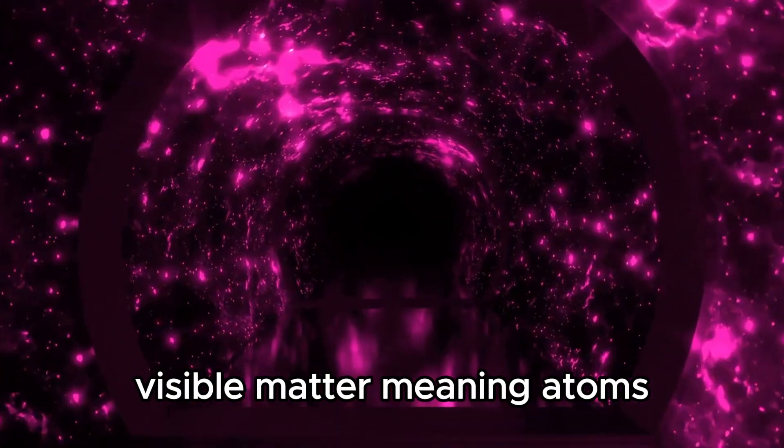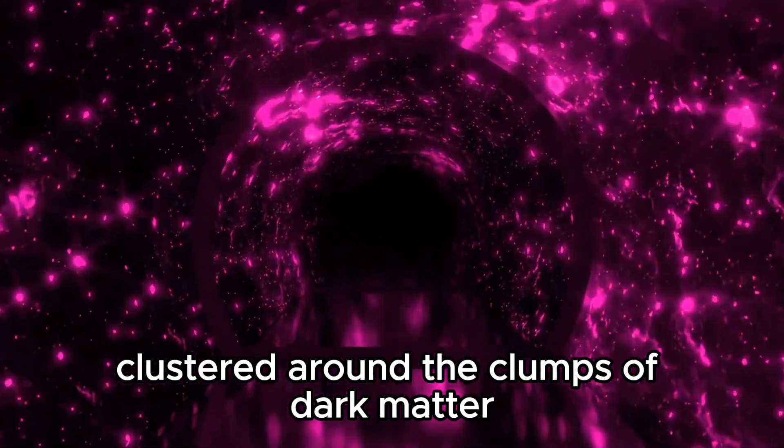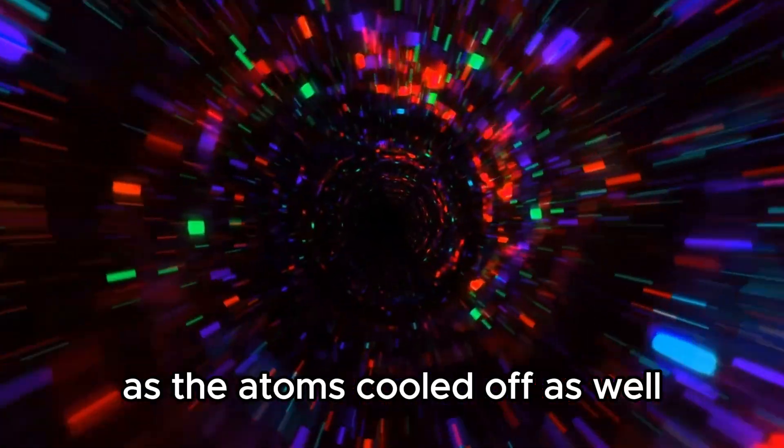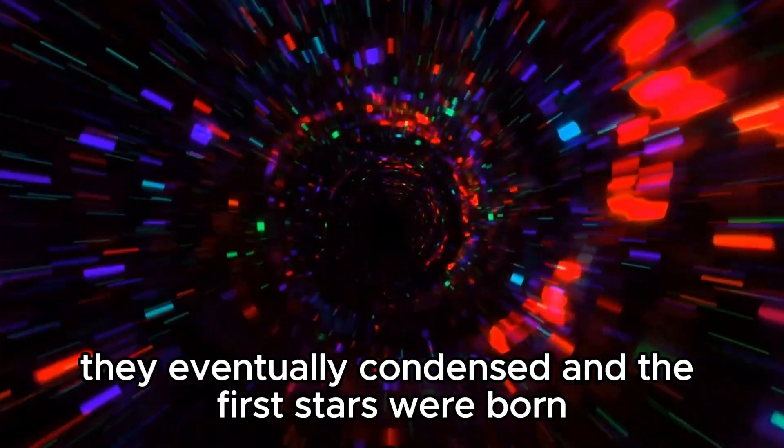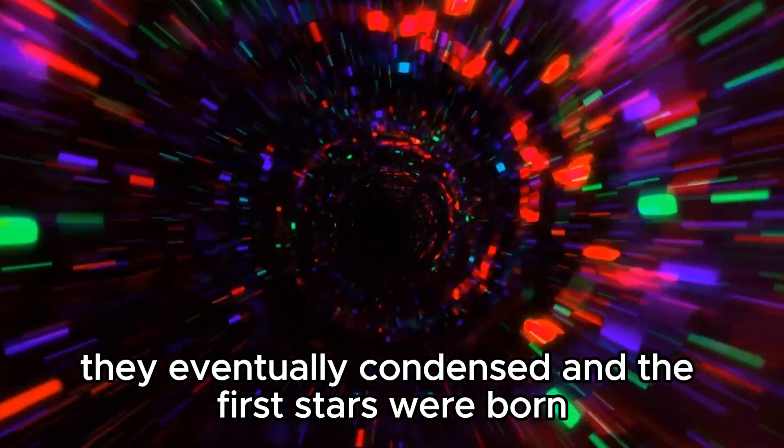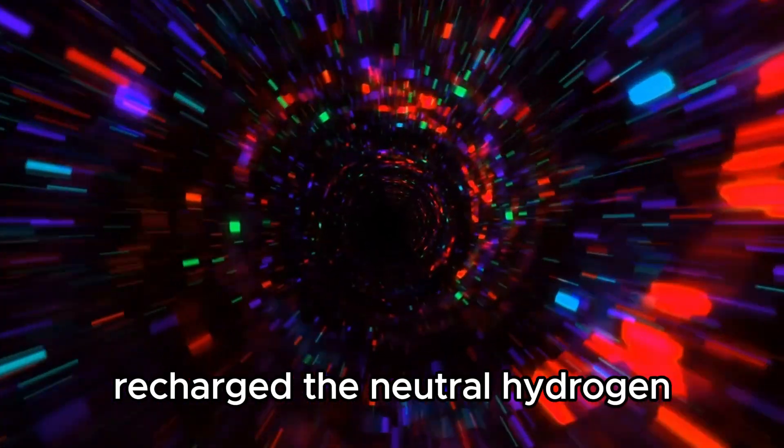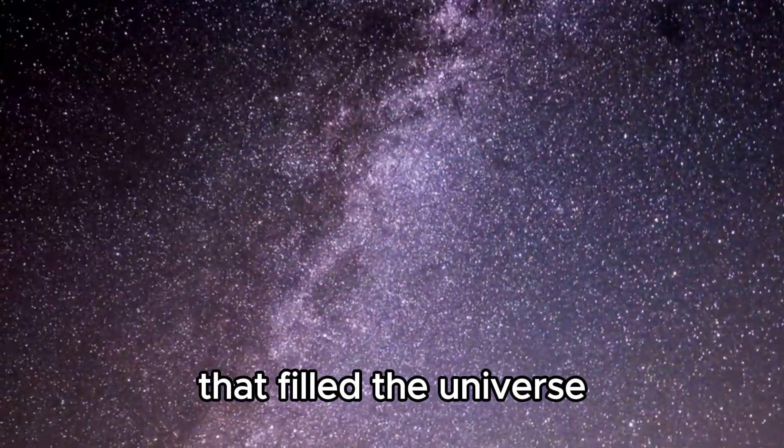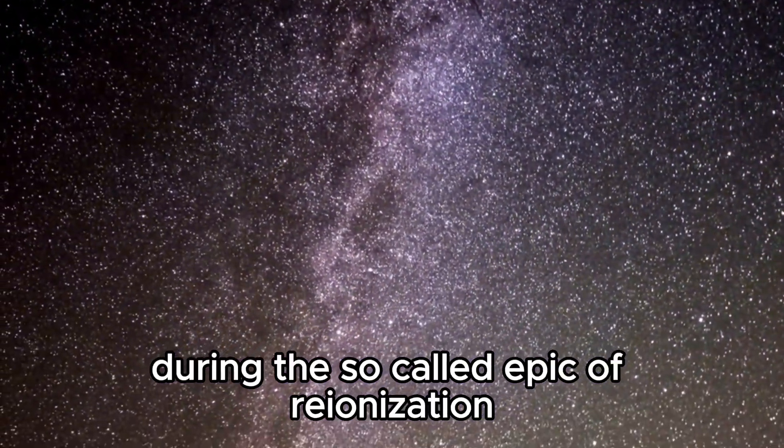Visible matter, meaning atoms, clustered around the clumps of dark matter. As the atoms cooled off as well, they eventually condensed, and the first stars were born. These new sources of radiation recharged the neutral hydrogen that filled the universe during the so-called epoch of reionization.